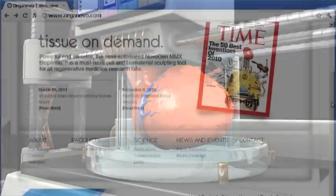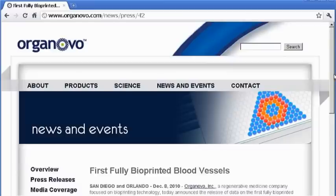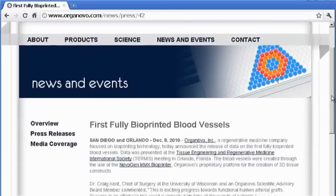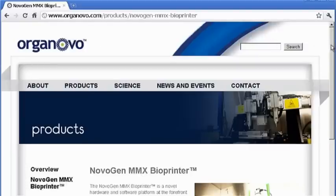Today, one of the pioneers of bioprinting is Organovo. Here, scientists have already bioprinted experimental human blood vessels and even animal cardiac tissue.